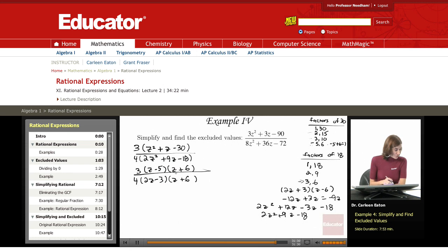Now what I need to do is look for common factors. 3 and 4 no common factors, you can't really cancel out there. z minus 5 not a common factor nor is 2z minus 3, but I do have z plus 6 as a common factor so I'm going to go ahead and cancel those out. And that's going to leave me with 3 times z minus 5 over 4 times 2z minus 3. So this is my simplified form.